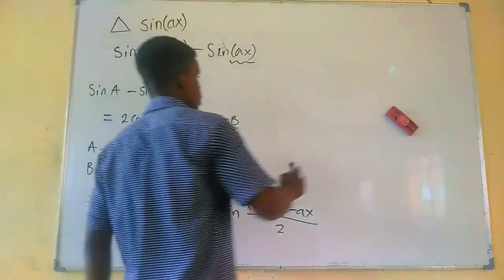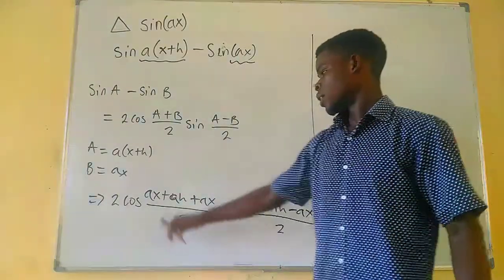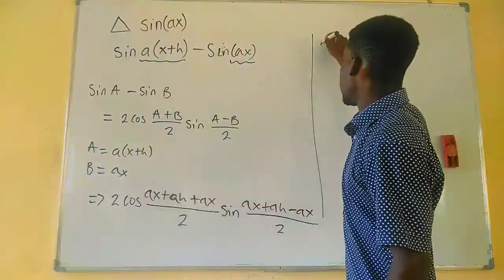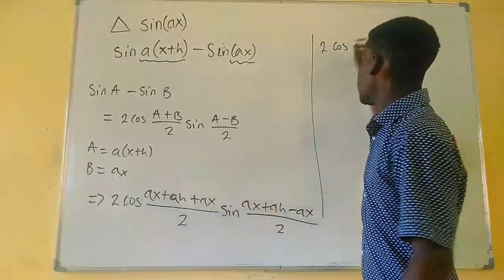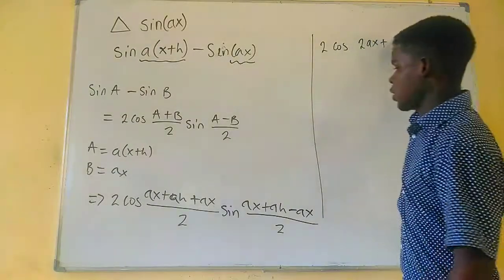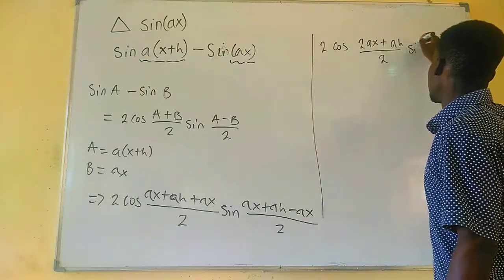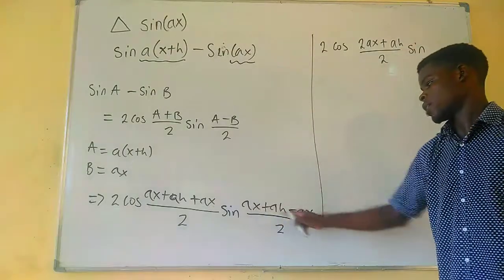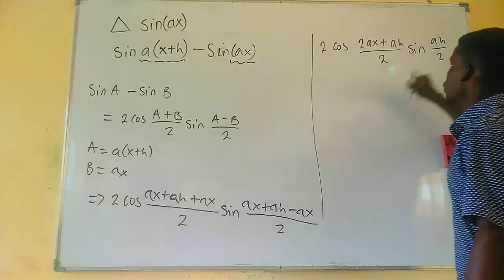So from here, we can just have that. This will simplify to get 2 cosine of, this is just 2ax, so we are going to have 2ax plus ah divided by 2 times sine of, this and this will get to 0, we are just going to have sine of ah over 2.